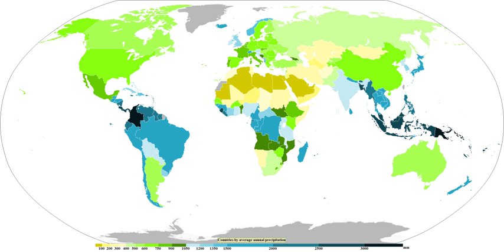Like other precipitation, hail forms in storm clouds when supercooled water droplets freeze on contact with condensation nuclei, such as dust or dirt. The storm's updraft blows the hailstones to the upper part of the cloud. The updraft dissipates and the hailstones fall down, back into the updraft, and are lifted again. Hail has a diameter of 5 mm or more. Within METAR code, GR is used to indicate larger hail of a diameter of at least 6.4 mm. GR is derived from the French word grêle.